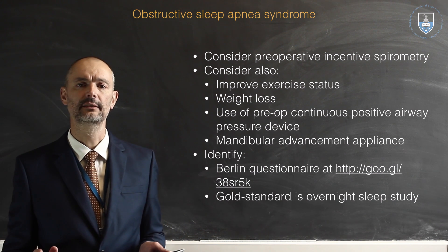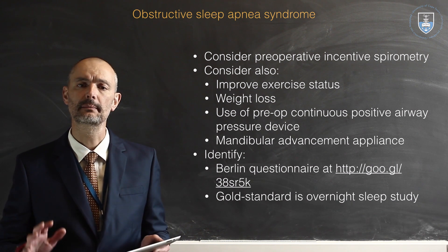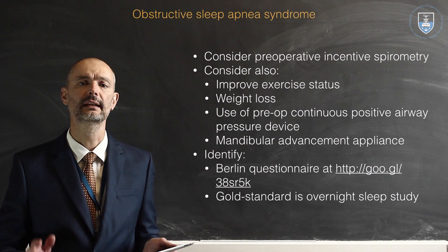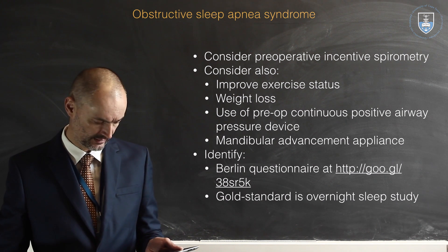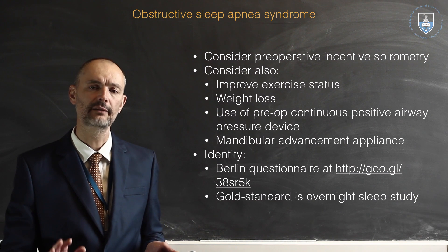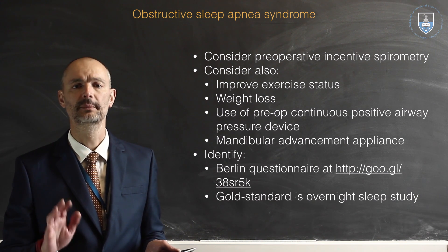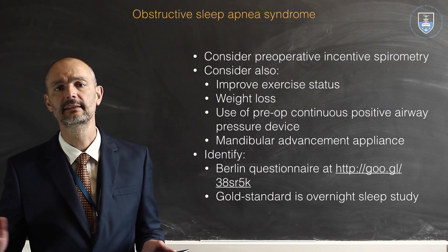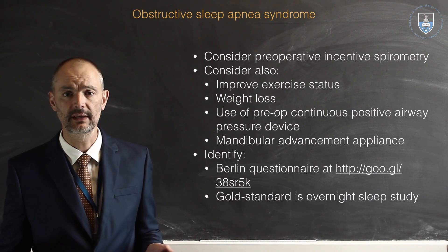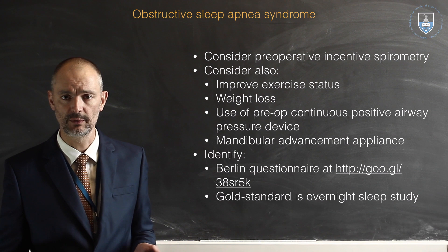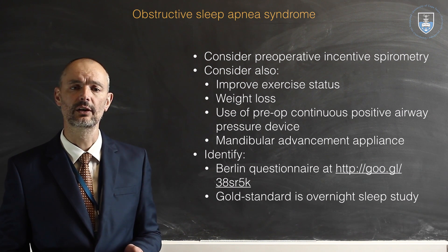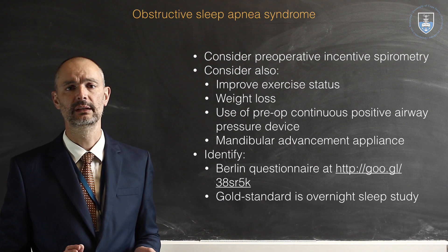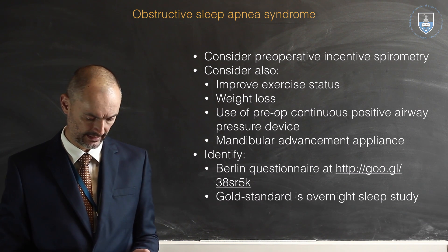How do we identify these patients? There is a Berlin questionnaire — visit the shortened URL shown and you'll find a PDF of that questionnaire, which will identify patients at risk of obstructive sleep apnea syndrome. The gold standard, however, is an overnight sleep test. Not all units have that test and it's not easy to send a patient for it, but it certainly is the gold standard.